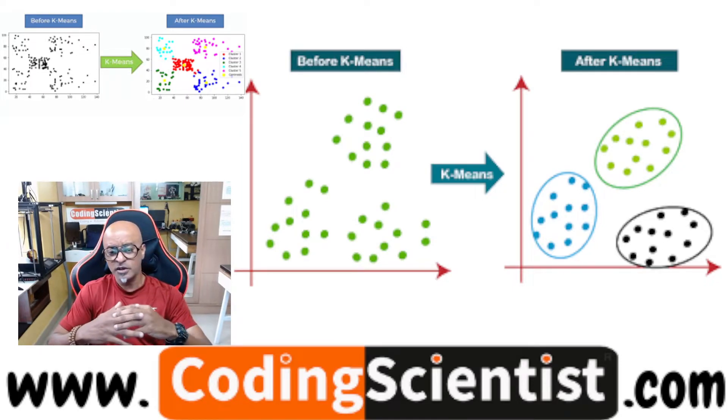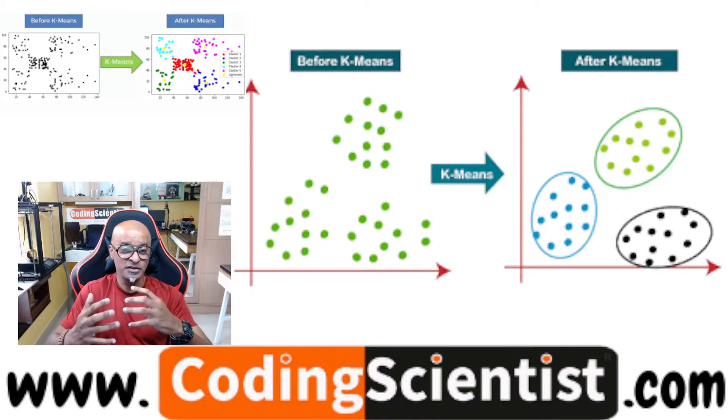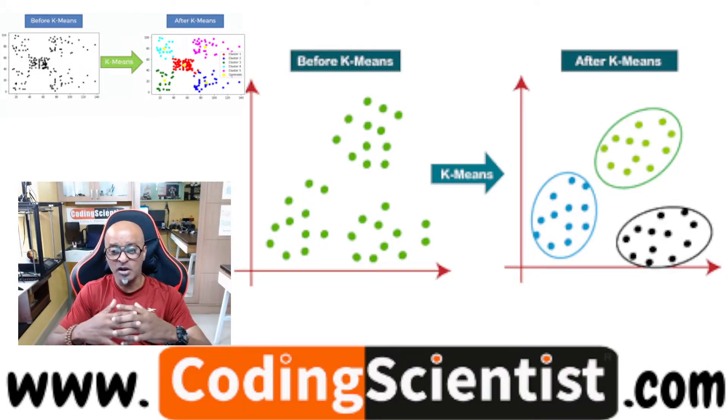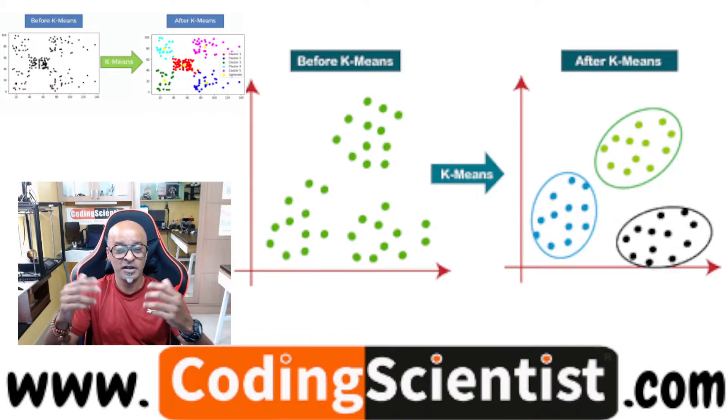This also assumes that the number of clusters are already known. It depends upon how you're going to classify those clusters. It is also called the flat clustering algorithm. The number of clusters identified from data by algorithm is represented by K. That's why it's called K-means.